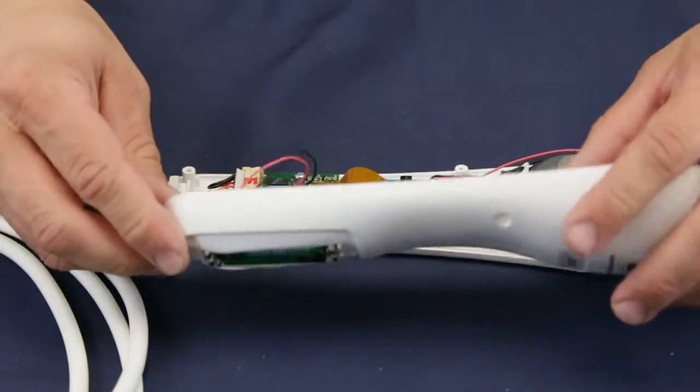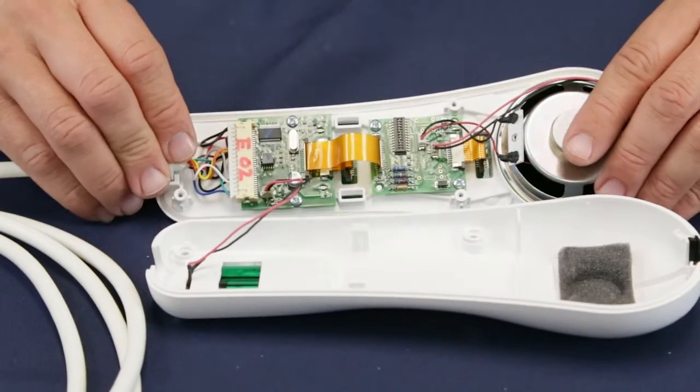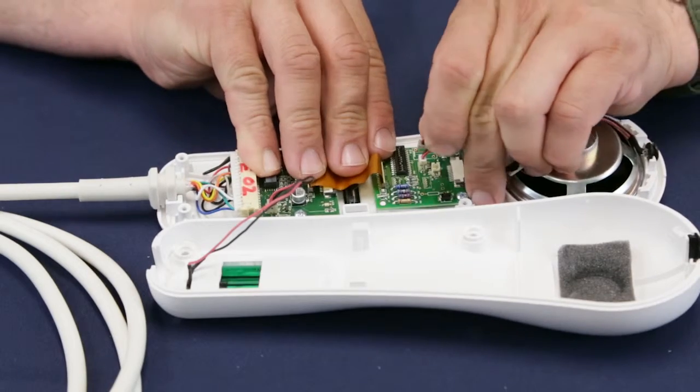Changing the entertainment circuit board requires disconnecting all the parts from the board and unscrewing the board from the case. First, obtain a new entertainment circuit board.